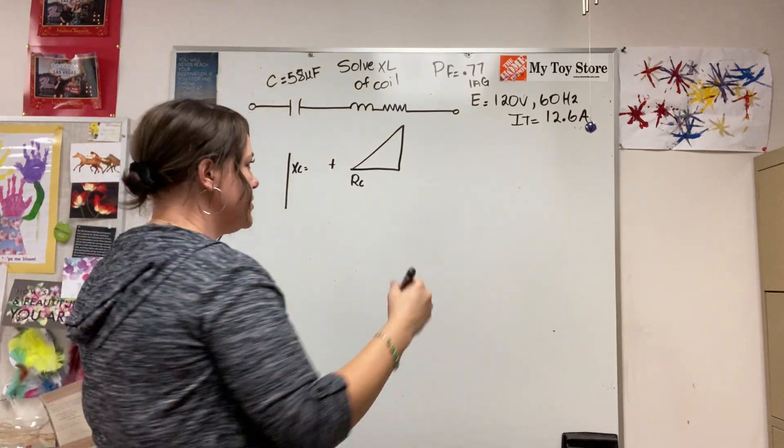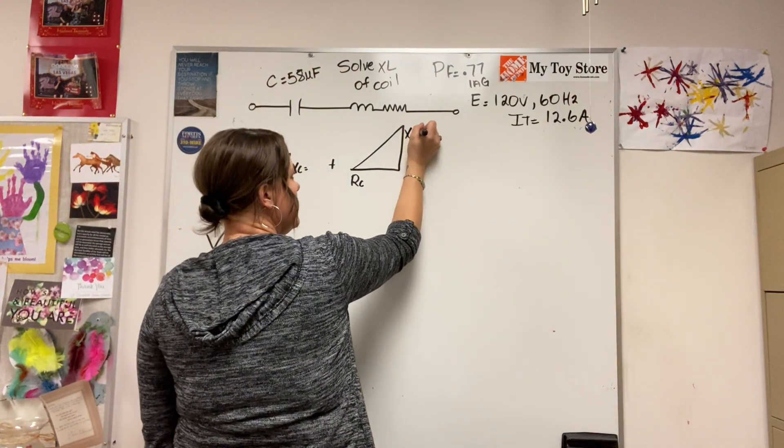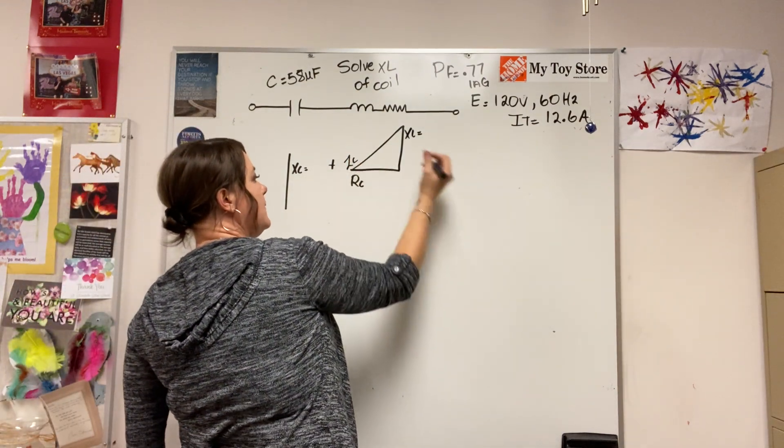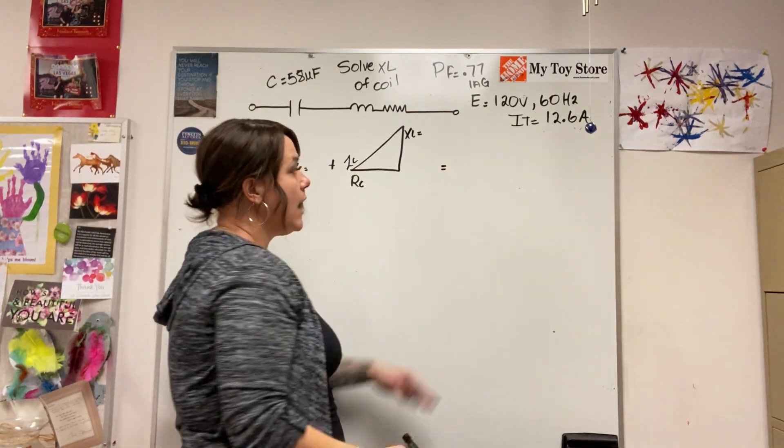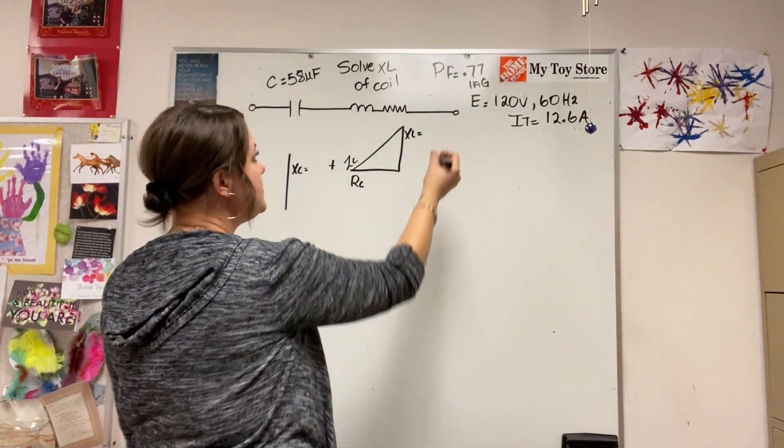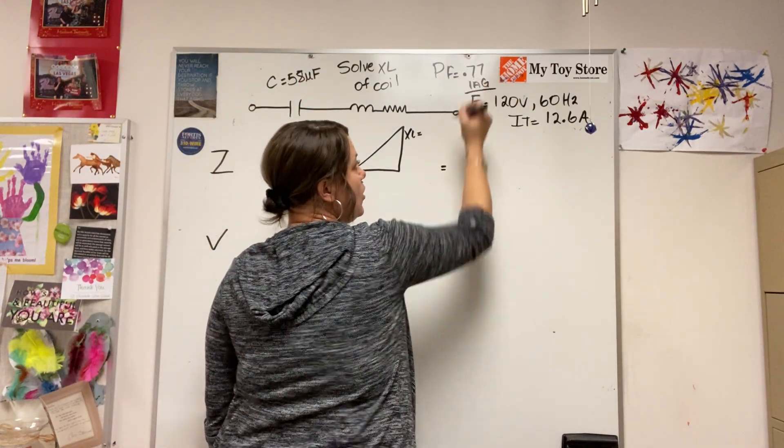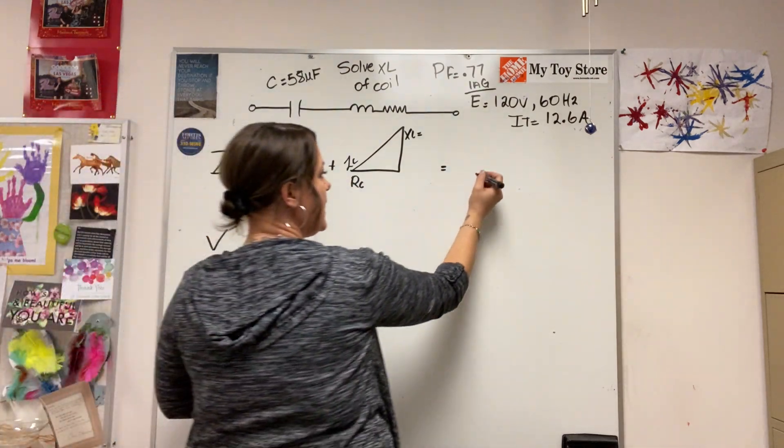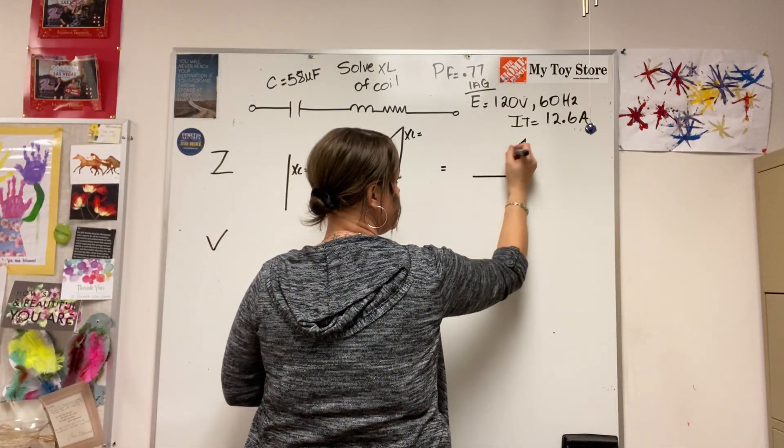Then I'm going to have my Z coil, and then my overall total. I'm going to draw my circuit total in the upright direction because they told me the overall circuit power factor is lagging.